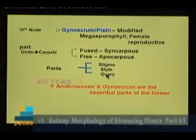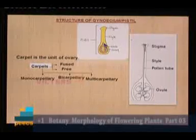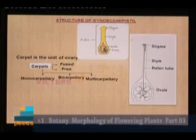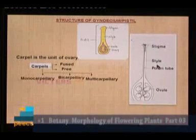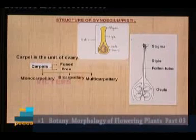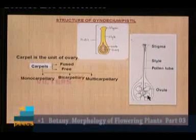The androecium and gynoecium are the essential parts of the flower. Androecium is the male reproductive part that produces the sperms. Gynoecium is the female reproductive part where the egg or ovum is produced. In the diagram we can see the structure of the gynoecium: the basal ovary with ovules, the narrow slender style, then the stigma. Pollen grains fall on the stigmatic surface, the pollen tube moves through the style and reaches the female gametophyte of the ovule, where fertilization takes place.